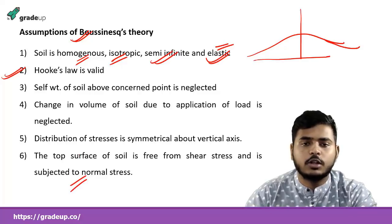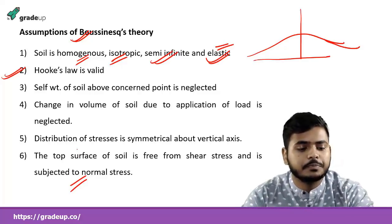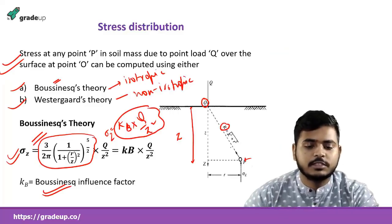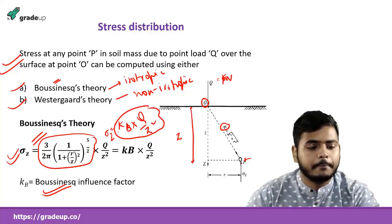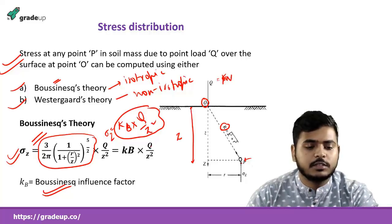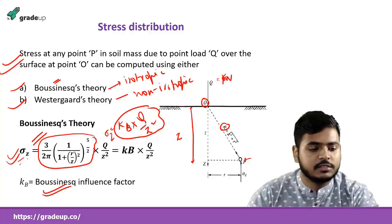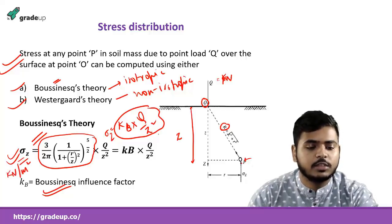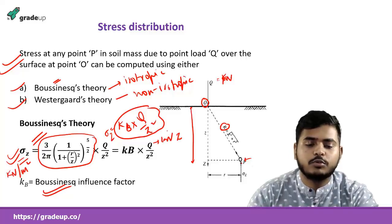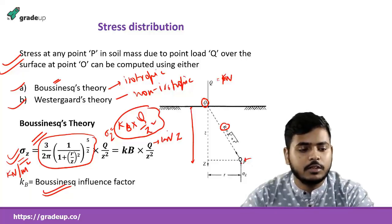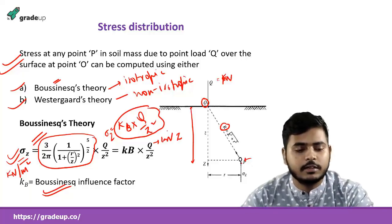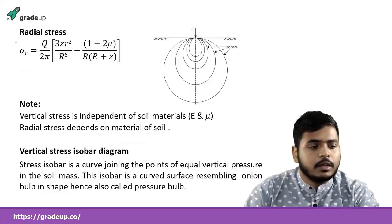We focus only on normal stress — finding the stress acting at a point due to load Q. This Q is in kN (not stress). σz is in kN/m², and Q will be given as a load in kN. The depth will also be given, and you have to find the stress at that depth.